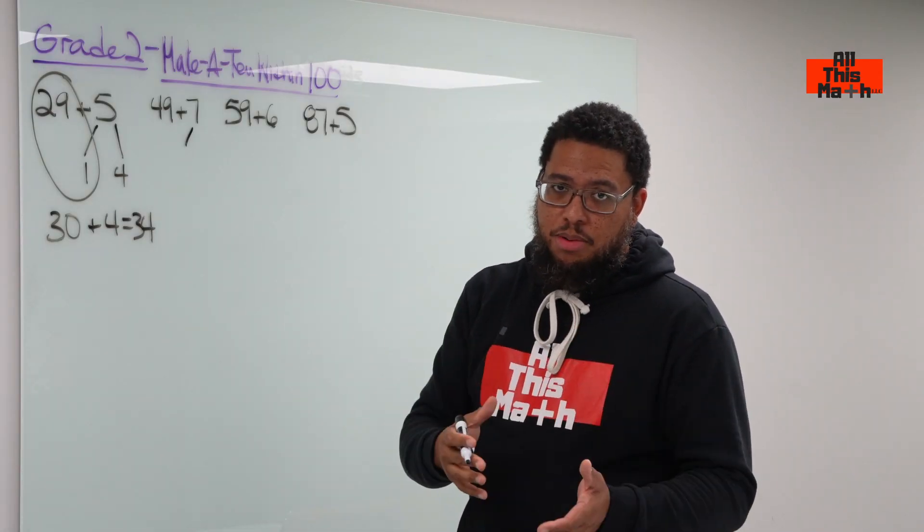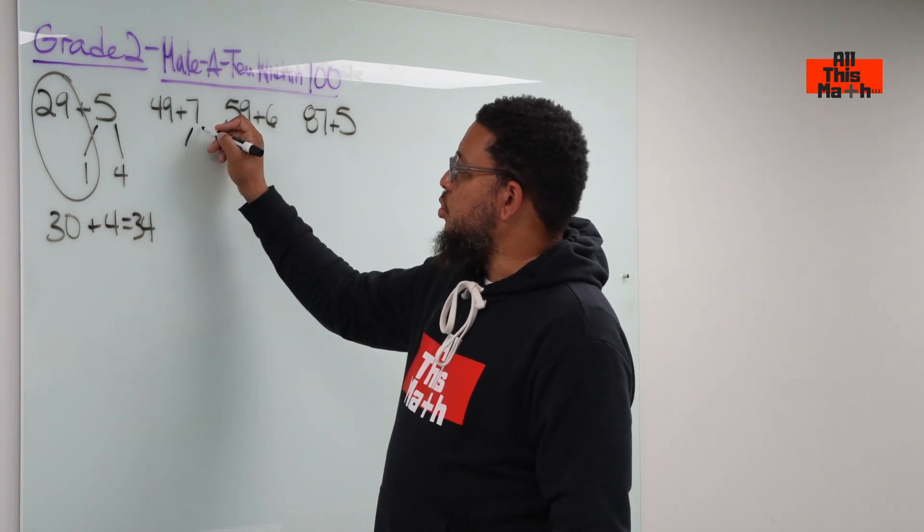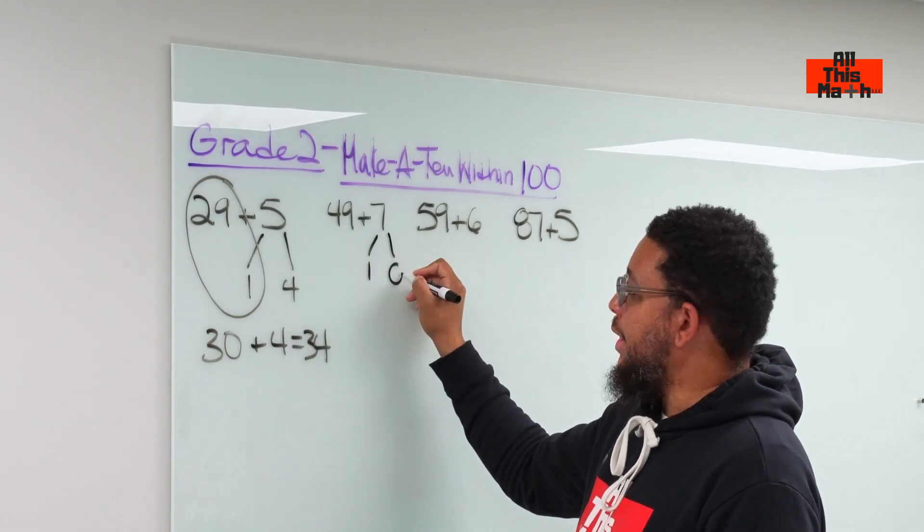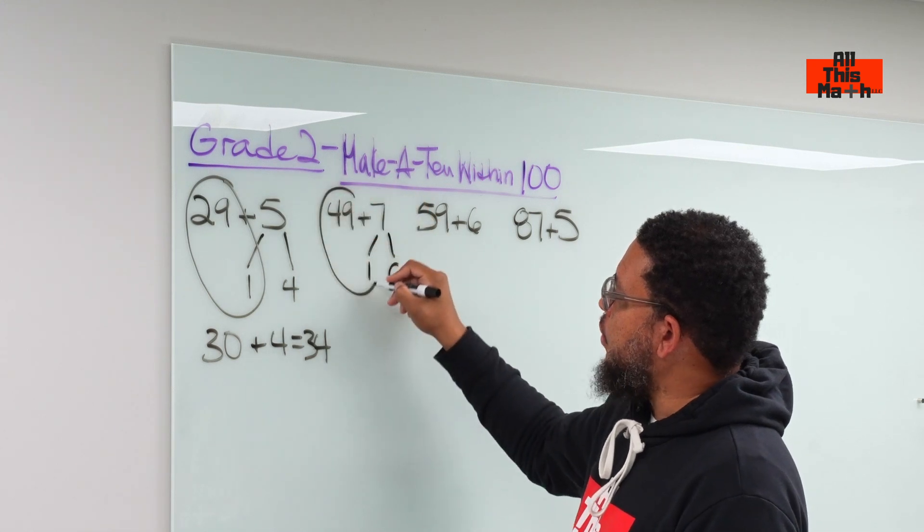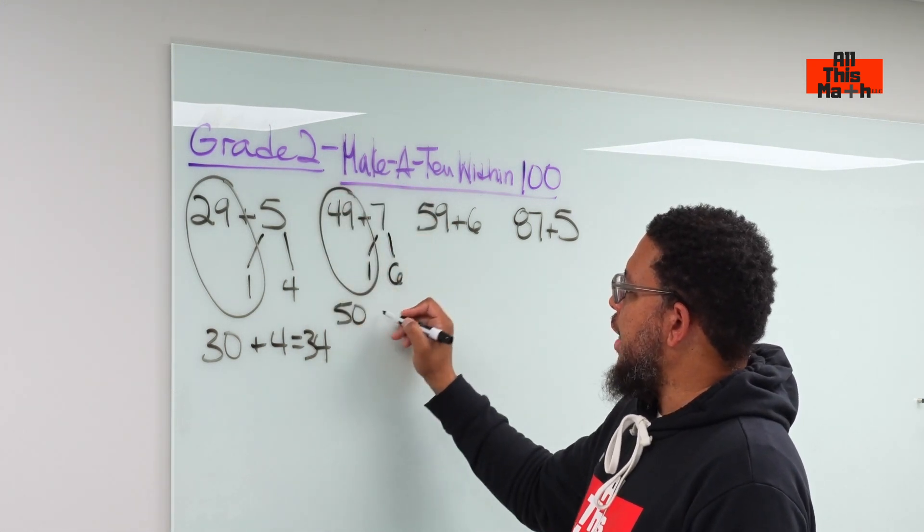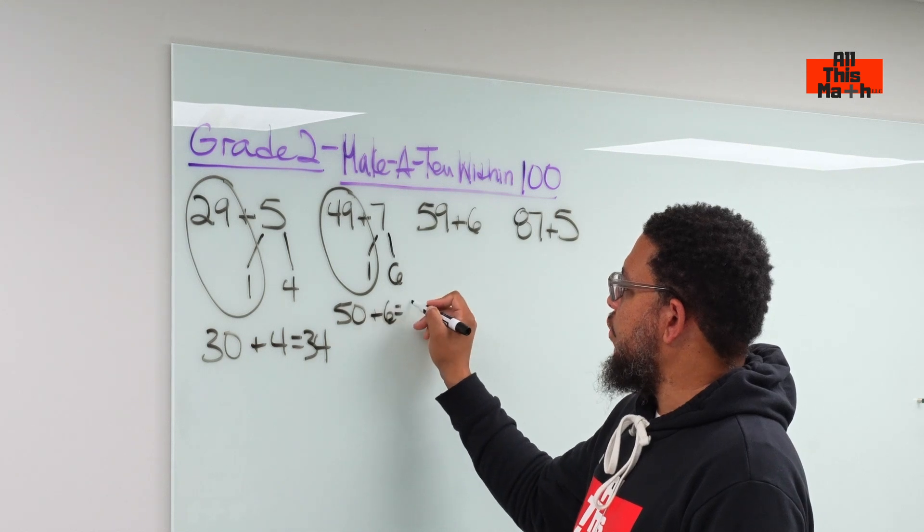We either decompose the 7 or break down the 7 into two addends. So we have 1 and 6. So we put the 49 with the 1. That gives us 50. And then we're going to add that 6 to get 56.